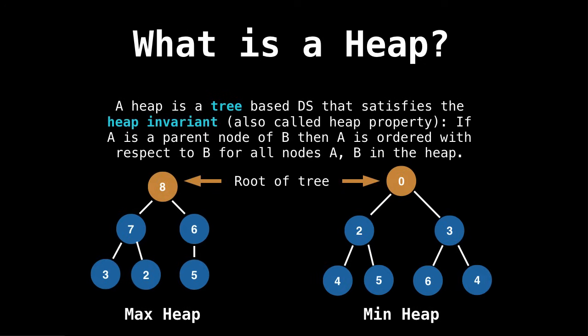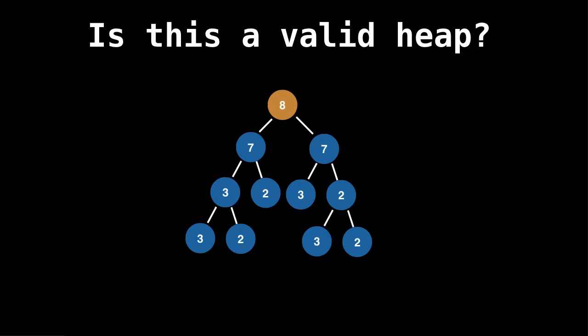So why are we interested in heaps? Well, heaps form the canonical underlying data structure for priority queues. So much so that priority queues are sometimes called heaps. Although this isn't technically correct, since the priority queue again is an abstract data type. Meaning it can be implemented with other data structures also.